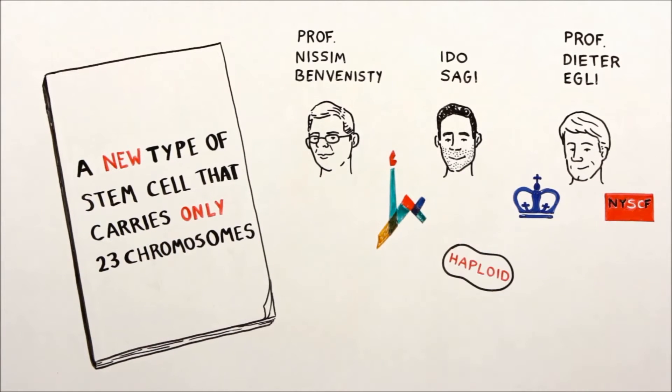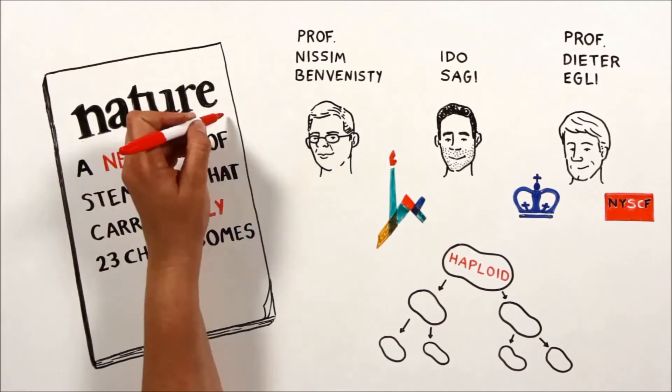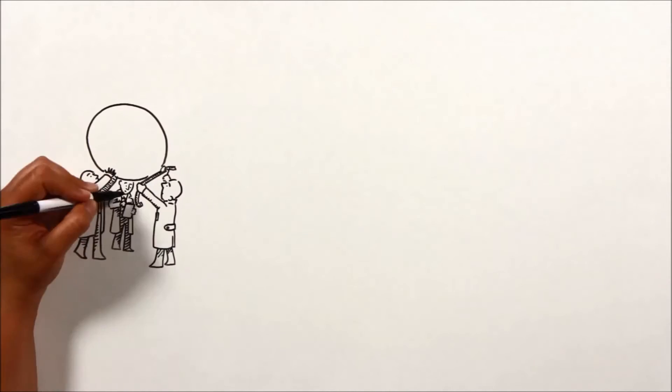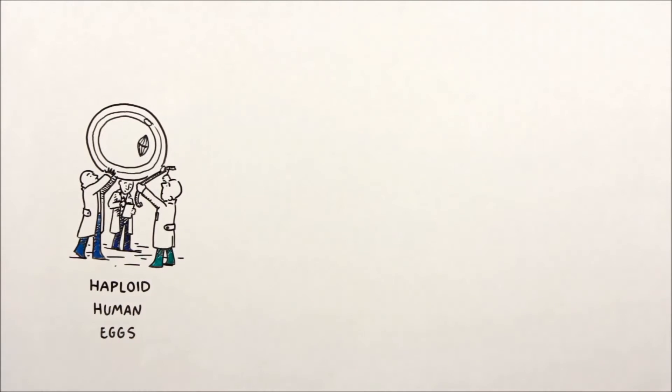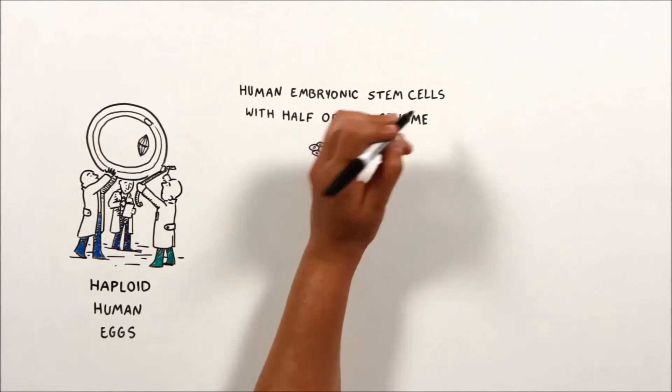The discovery of human cells capable of cell division with just one copy of their genome was reported in the prestigious journal Nature. The scientists were able to start with haploid human eggs and use them to generate human embryonic stem cells with half of the genome.